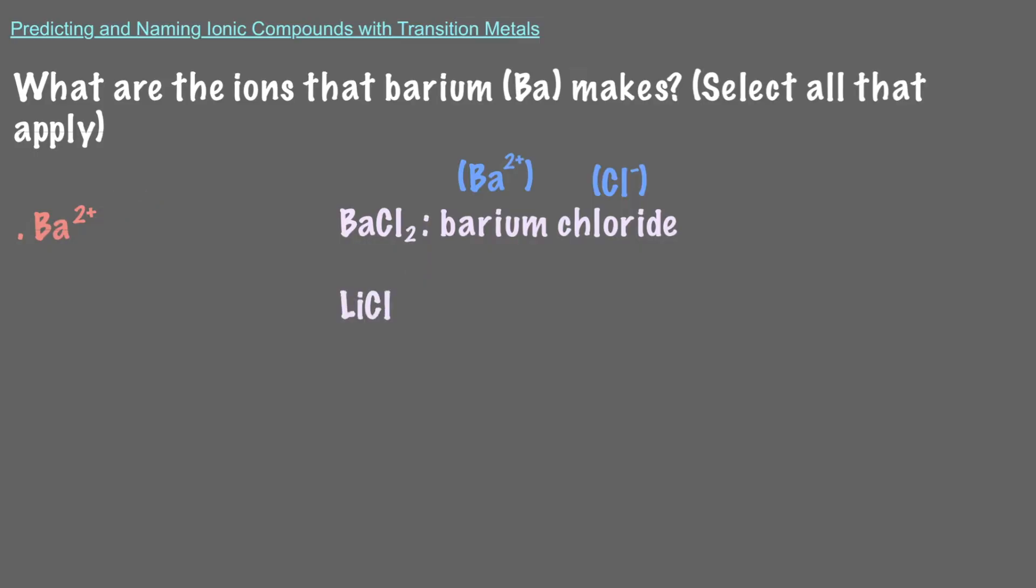And LiCl is lithium chloride. For alkali metals like lithium, we will always get a cation with a positive 1 charge, lithium plus.